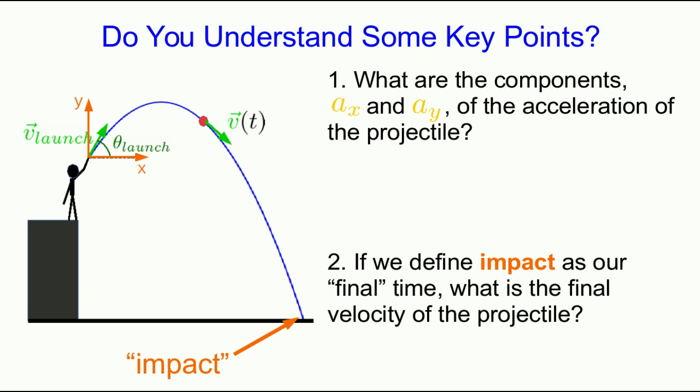I ended off the first half of this video lecture by asking these two questions because you really need to understand the answers if the rest of what I'll say about projectiles is going to make any sense. The first was about the acceleration components. The acceleration is the free fall acceleration, so it is g down, which in the chosen axes I've defined here is negative g times j hat. That means our y component of the acceleration is negative g and the x component is zero. Of course, I could choose to orient my y-axis down, in which case my y acceleration would be plus g, and that's often a more convenient choice.